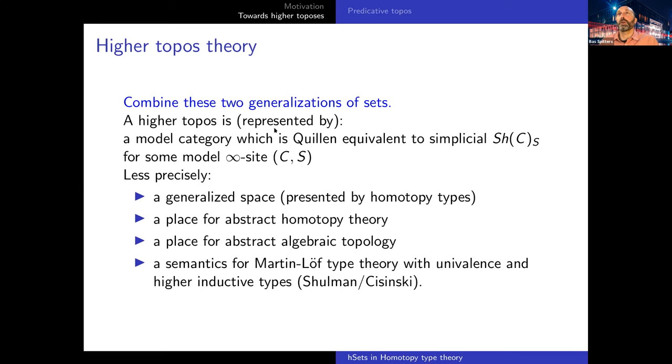There's a big theory about higher topos. There's a big book by Jacob Lurie that describes higher topos. Christian will say a bit about model categories. It's a model category equivalent to simplicial sheaves on some model infinity site. If you know what these words mean, you know this is slightly off because this is not really a model of type theory due to coherence conditions, but this can be made precise.